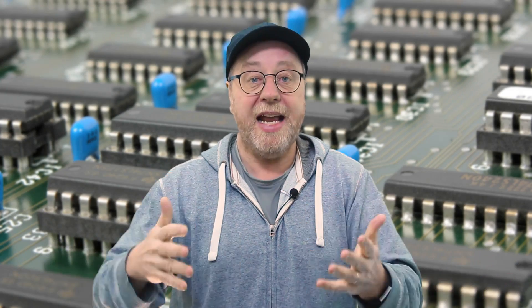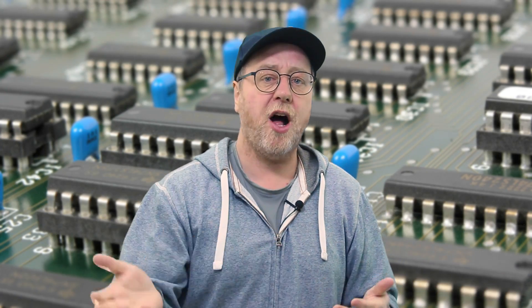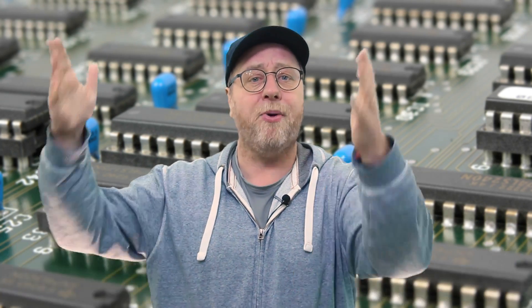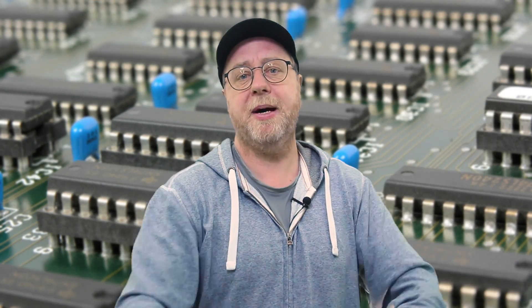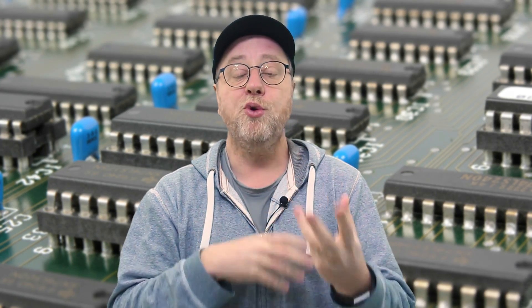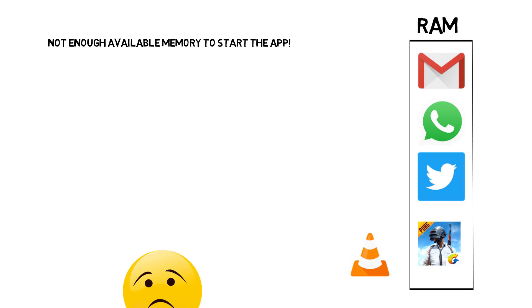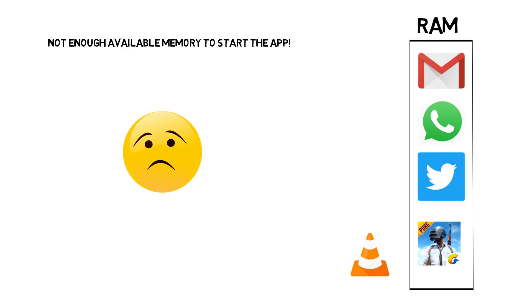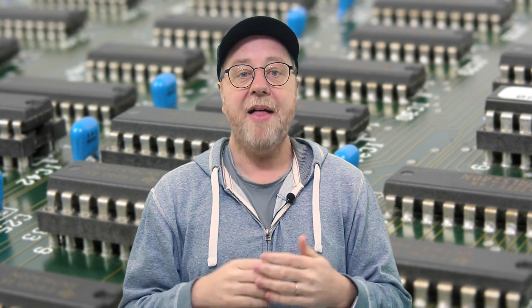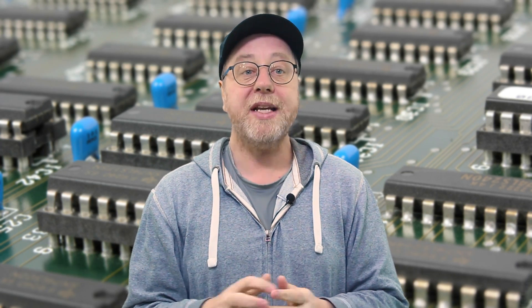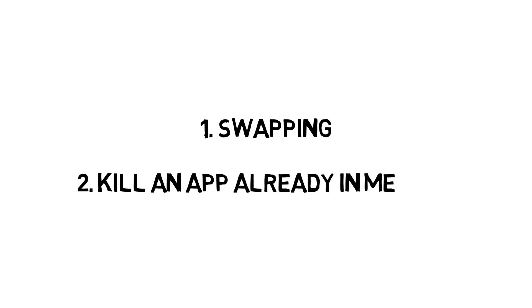That's all fine when there's enough memory. When you've just rebooted your phone and start the first app, there's 1.7 gigabytes available — take as much as you need. But over time you start other apps, load them into memory, and the available memory reduces as the number of apps increases. At some point there won't be enough available memory for the next app, and now Linux and Android have a problem. There are one of two things they can do: use swapping, or kill an already existing process to free up memory.